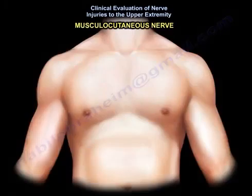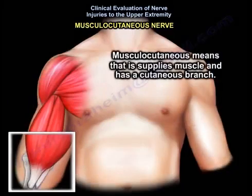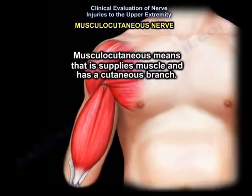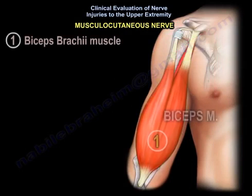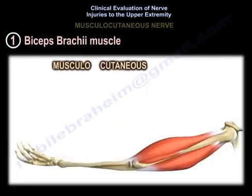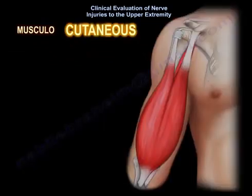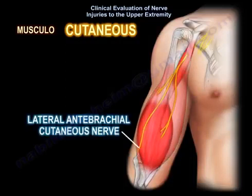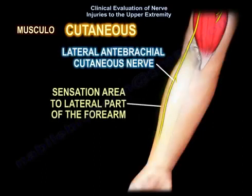The musculocutaneous nerve — the name means that it supplies muscle and has a cutaneous branch. When you say muscle, we're talking about the biceps. When we're talking about cutaneous, the musculocutaneous supplies sensation to the lateral part of the forearm.